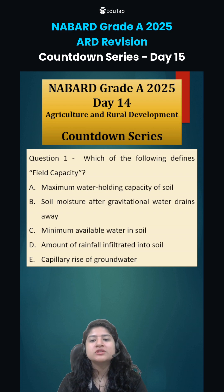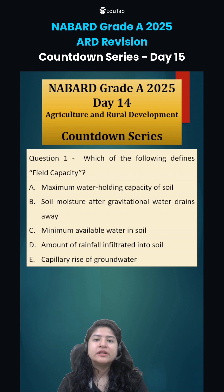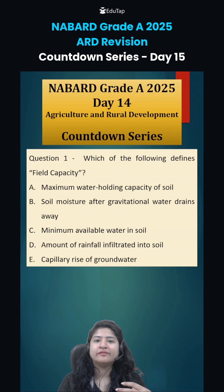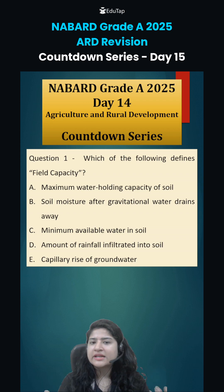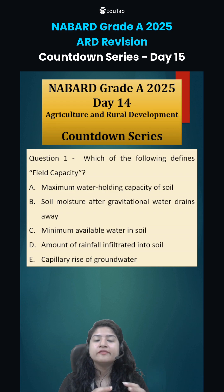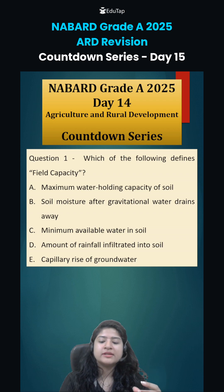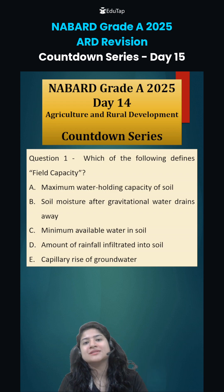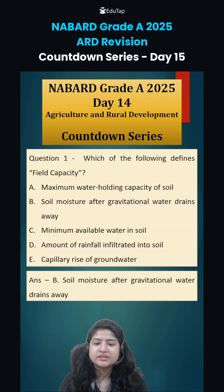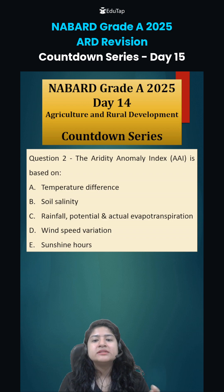Question one: which of the following defines field capacity? Field capacity means that after excess water moves down due to gravity — known as gravitational water — whatever water is finally left in the pores of the soil, where both air and water are present, after excess water has left the system, that is known as field capacity.